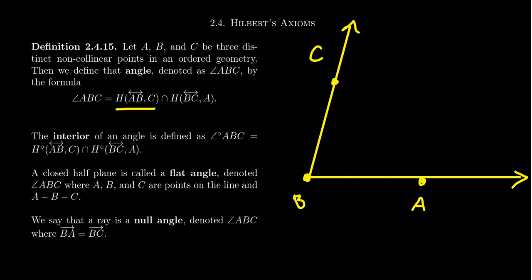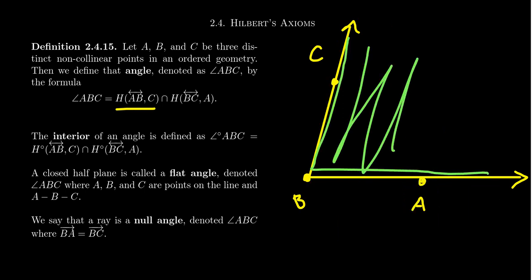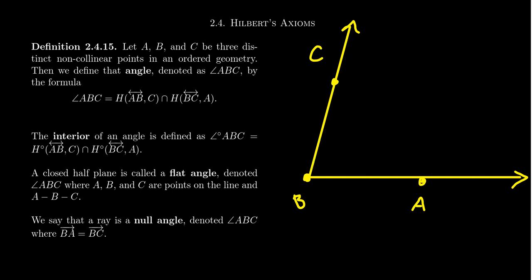But then also consider the line BC, right? And it has two sides. There's this one and this one. And we want the side of the line that has the point A. So that's going to be this side of the line right here. Well, if we take the intersection of those two things, then the intersection of those half planes would be this area right here. And that gives us the so-called angle.